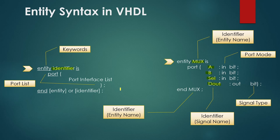It is important to use relative identifier names for each item so that we know what each is for. If you look at the left side of your screen, the underlined words are called keywords. Inside the entity and the END of entity we have the port list. Inside this port list we have a signal identifier to name our signal, then the port mode to tell whether it is input, output, or bidirectional, and finally each signal in the port list must be associated with a signal type. BIT is the signal type here, and it can have the possible values of 0 and 1.